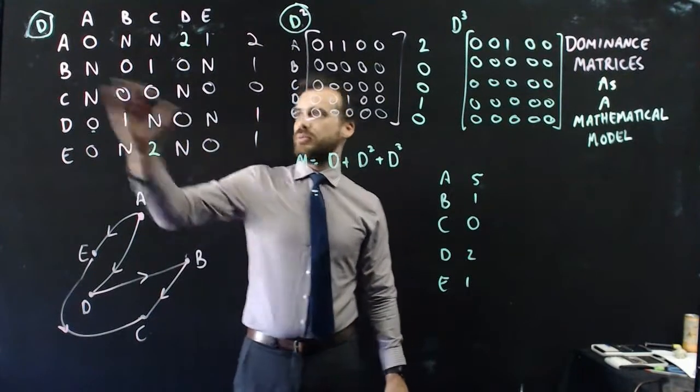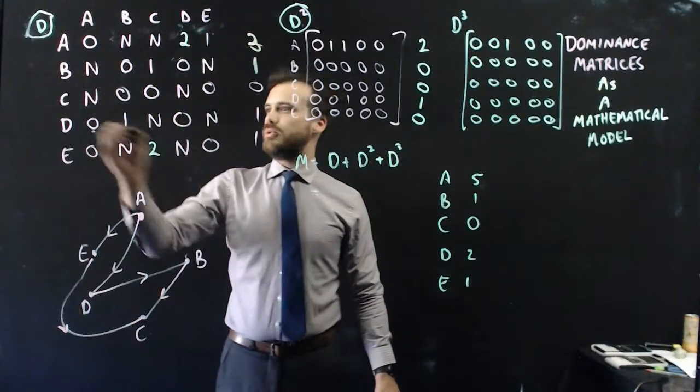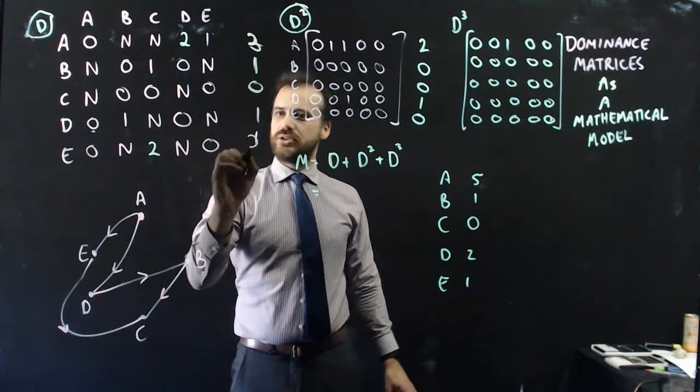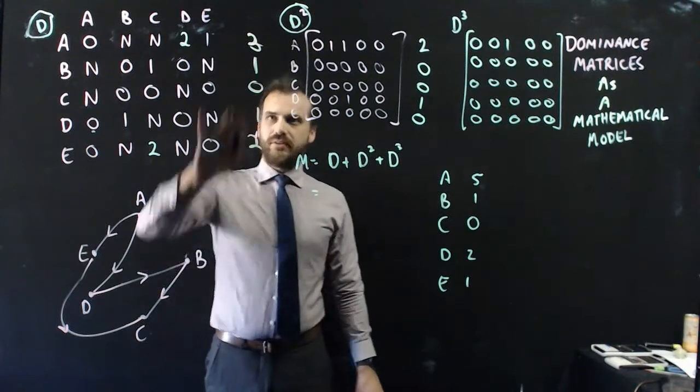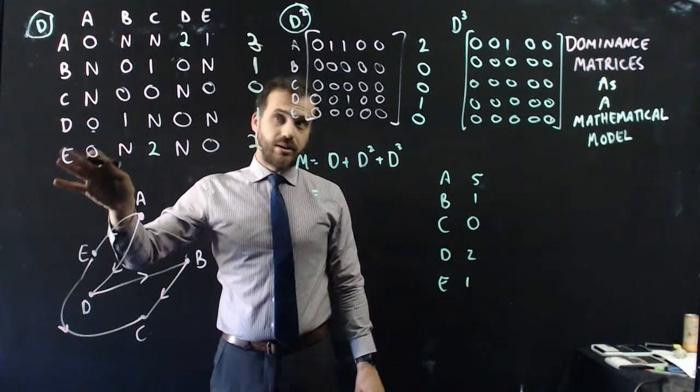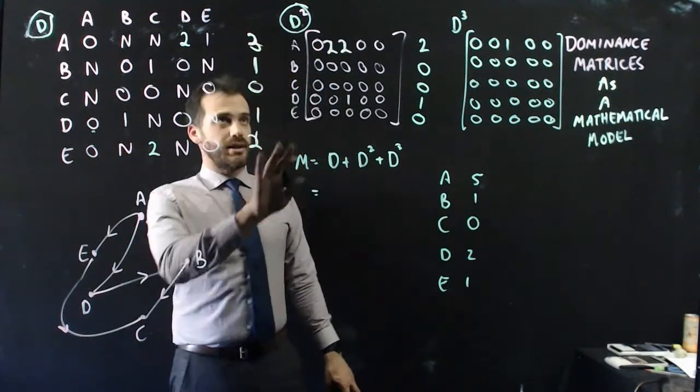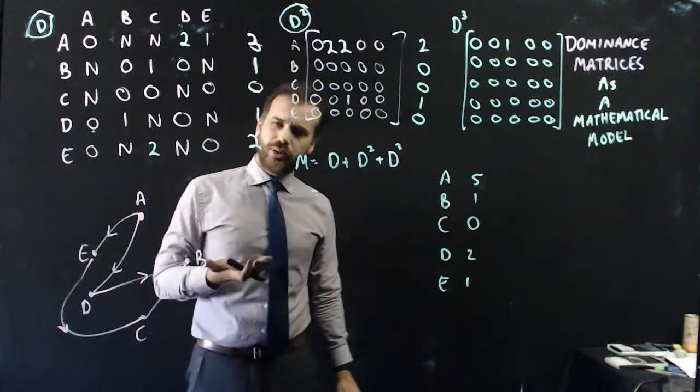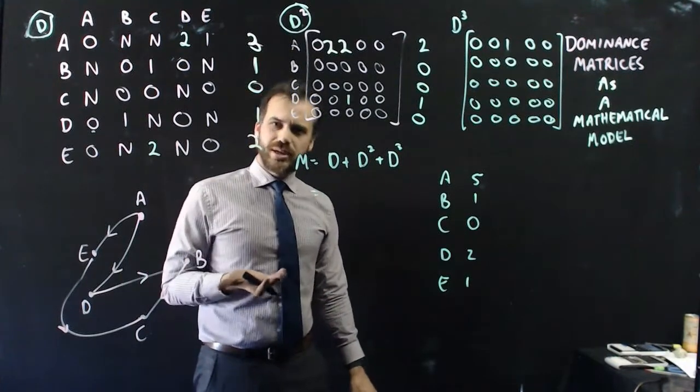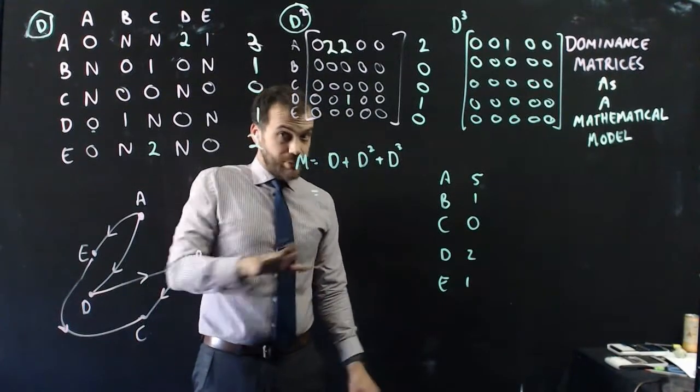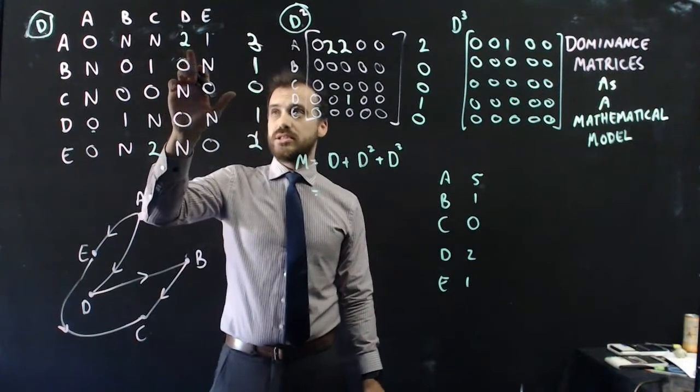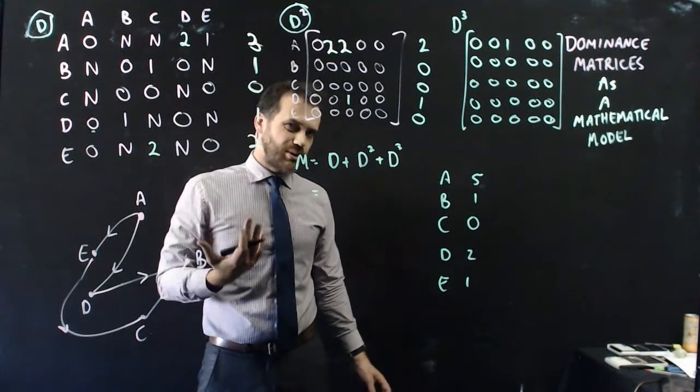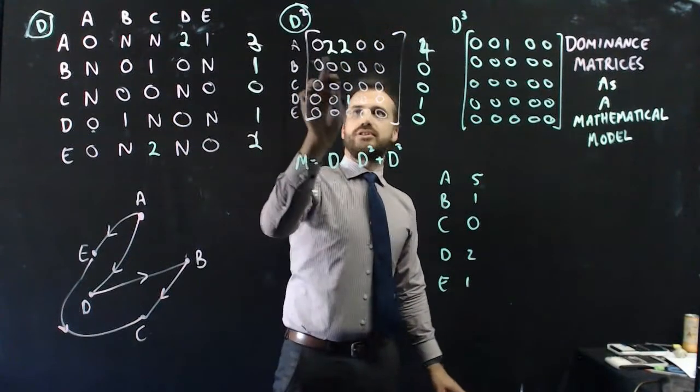Now how does that affect our rankings here? Well, that means that A has three points, B has one point, C has zero points still, not great C, D has one point, and E has two points. All right, so from the get-go we have a different thing here, but B and D haven't been separated yet. Now what happens if I take that matrix and square it? Well it has this effect here. Those second-hand wins that A gets now end up being worth double points. Now is that a good thing or a bad thing? Well, it seems kind of strange to me that these second-hand wins, that the games that never ever got played, because of this fact, because this one's worth double points, then this one ends up being worth double points, and because this one's worth double points, then that ends up being worth double points.